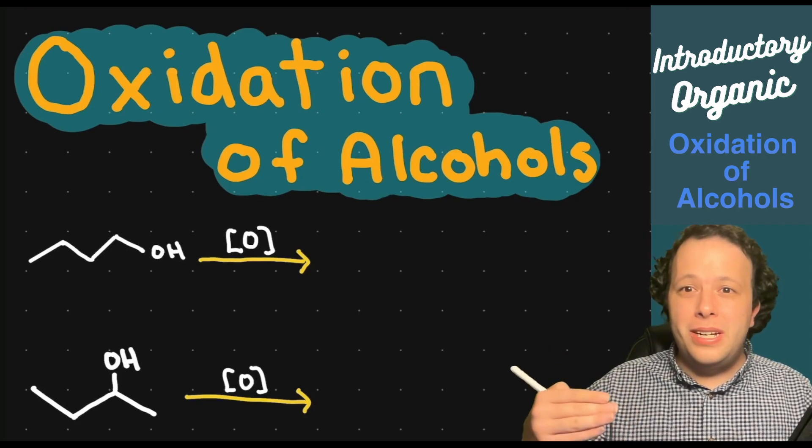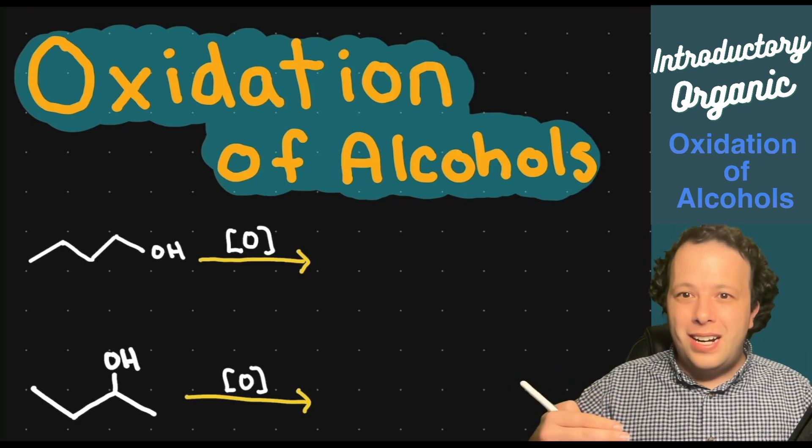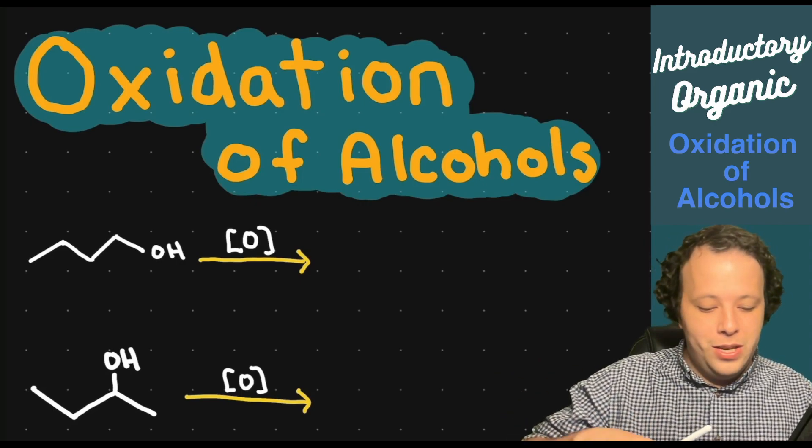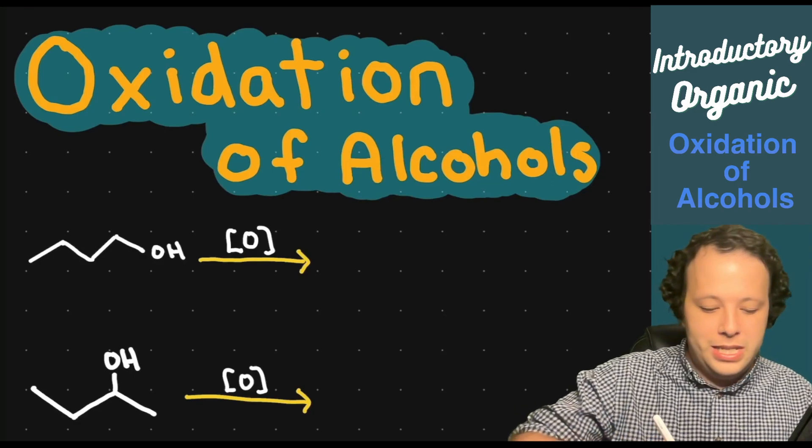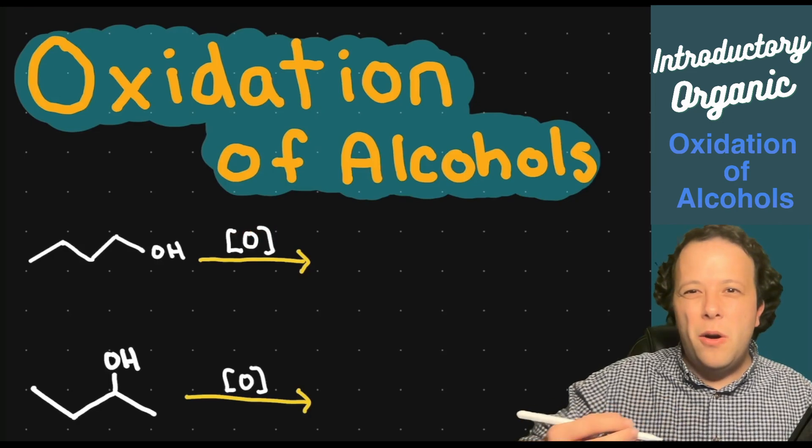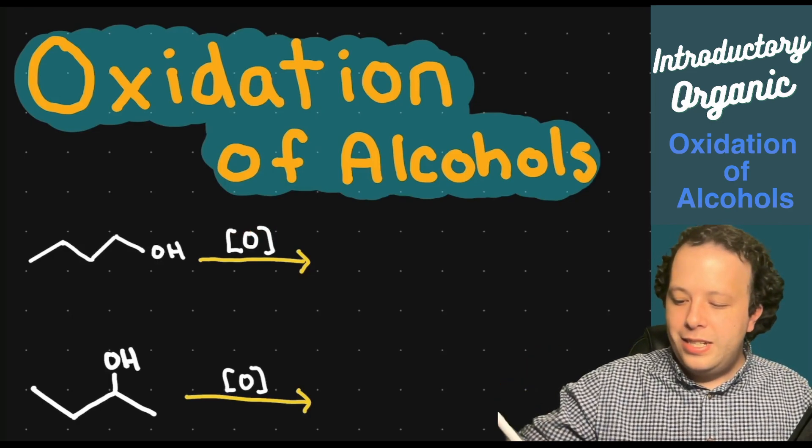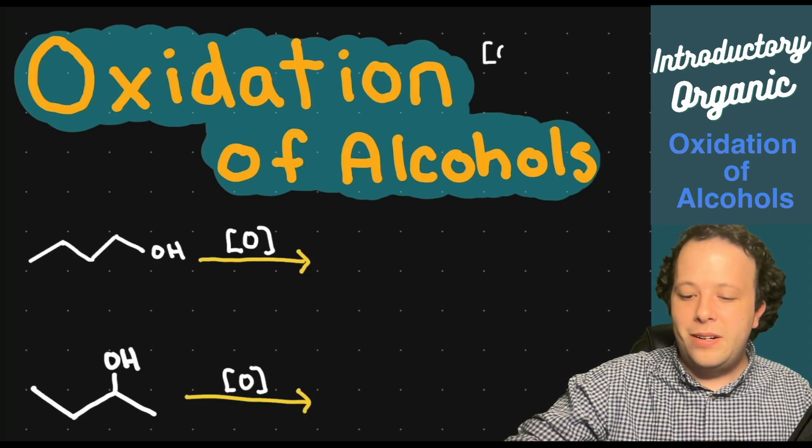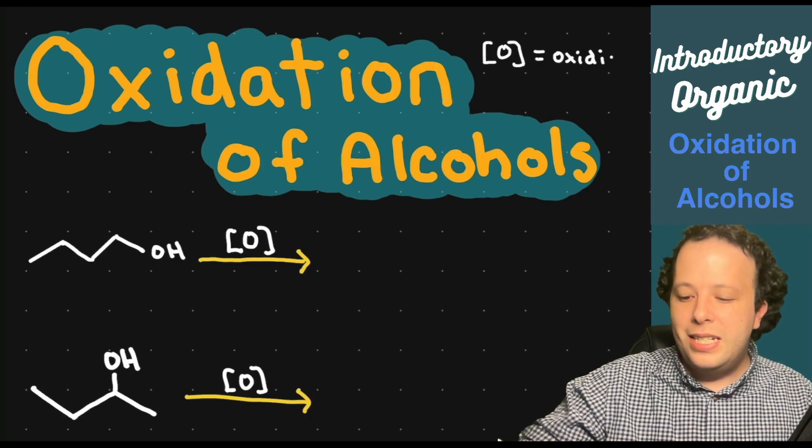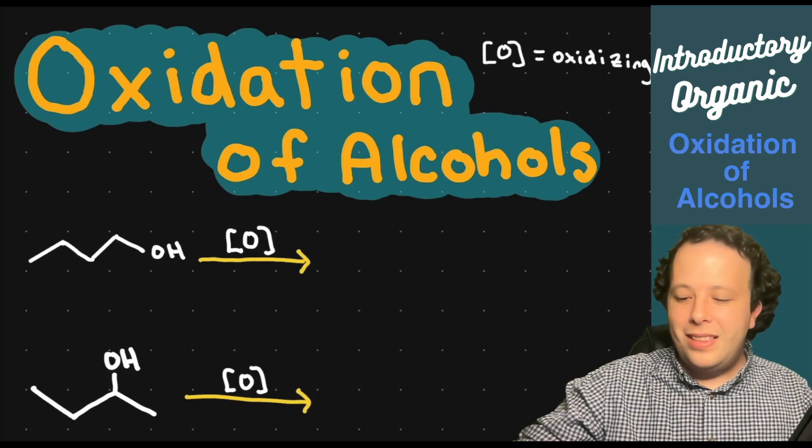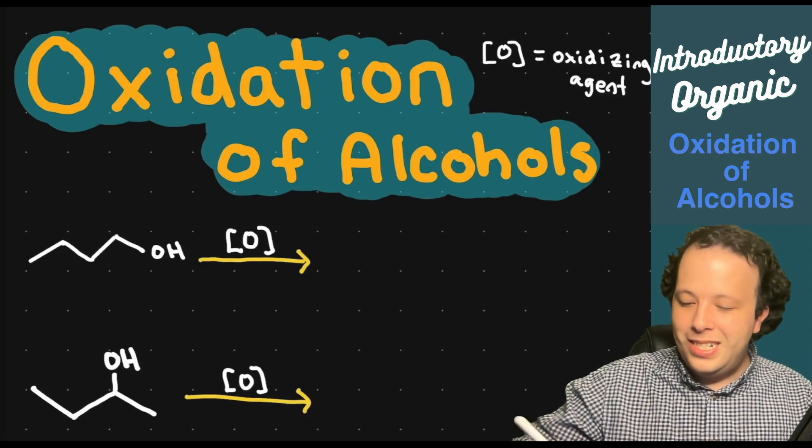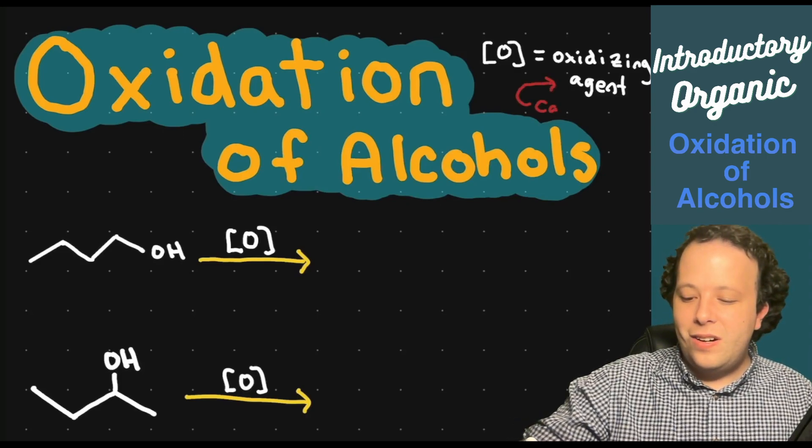Alcohols go through a common reaction where the oxygen is changing to different functional groups. In our first example, the alcohol is reacting with something shown as O in brackets. If you ever see an O in brackets, that is always representing the oxidizing agent, meaning this is what causes the oxidation reaction. It is our chaos agent, it causes the reaction.